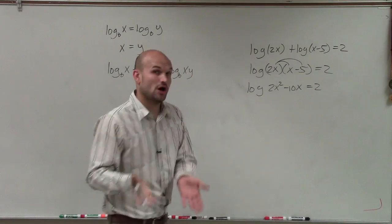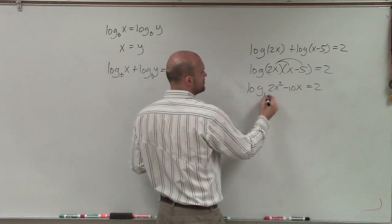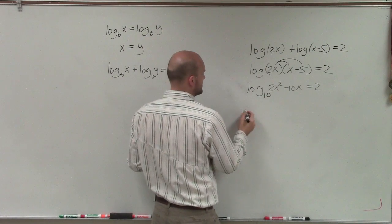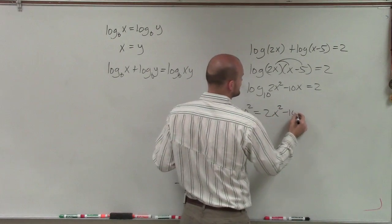So now, to solve from this equation, what I'm going to have to do is, again, rewrite this in exponential form. So remember, this base here is 10. So I have 10 squared equals 2x squared minus 10x.